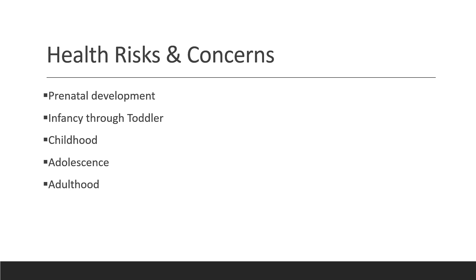During infancy through toddler, children are growing rapidly and steadily and achieve many developmental milestones. One risk or concern is failure to thrive — these are children whose weight or rate of weight gain is lower than others at the same age and of the same gender. This affects communication, socialization, and behavior. Child maltreatment is any abuse or neglect of children younger than age 18, including physical and emotional, sexual abuse, and neglect and negligence.